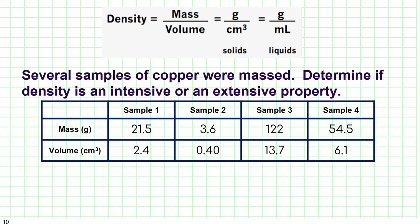So now coming back to that idea of intensive and extensive properties of matter. Here we have four samples of copper. These are all chunks of copper. Some are quite small. This guy has a mass of only 3.6 grams. Some are quite large. 122 grams of copper.